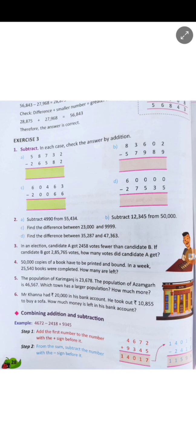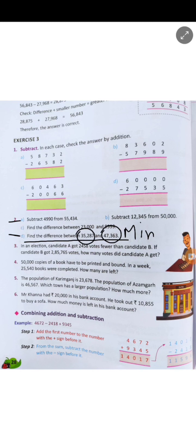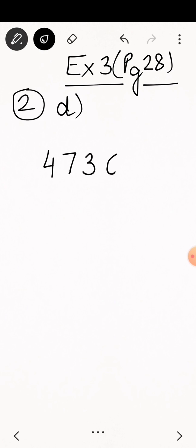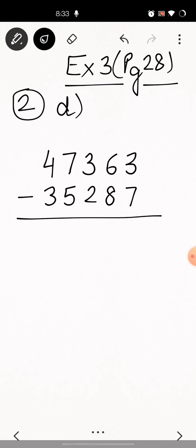Now look at question 2, part D. It says: find the difference between 35,287 and 47,363. Whenever you have such questions, look for the greater number. Here the greater number is 47,363, so this we will write on top — that is your minuend. The other number, 35,287, is your subtrahend. So you will write 47,363 first and subtract 35,287, the smaller number, from it.